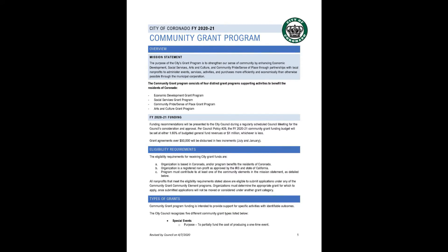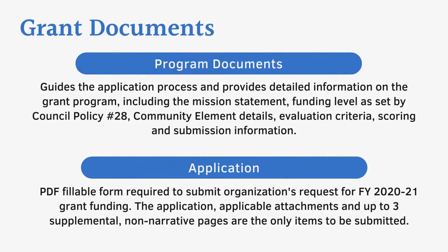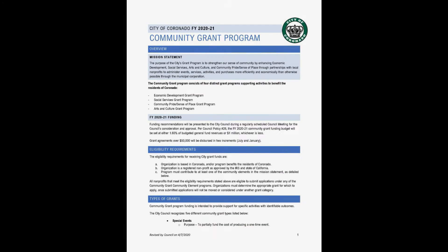There are two important documents in the grant process. Both can be found on the Community Grant Program webpage. First, the Grant Program document provides details on the current cycle program. This document should be referenced during the application, guides the process and what information organizations should provide. The document starts out with a mission statement and the expected funding. Please note, grant awards above $50,000 are separated and dispersed in two increments, generally July and January, depending on when organizations return their agreements.